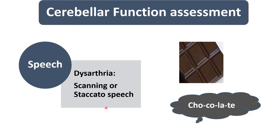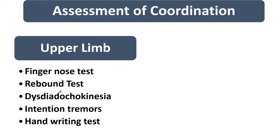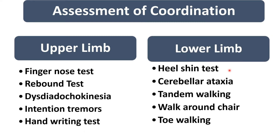After assessment of speech, we perform various coordination tests. In the upper limb: finger-nose test, rebound test, dysdiadochokinesia, look for intentional tremor, and handwriting test. In the lower limb: heel-shin test, look for cerebellar ataxia, tandem walking, walk-around-chair, and toe walking. I will explain each of these in detail one by one.